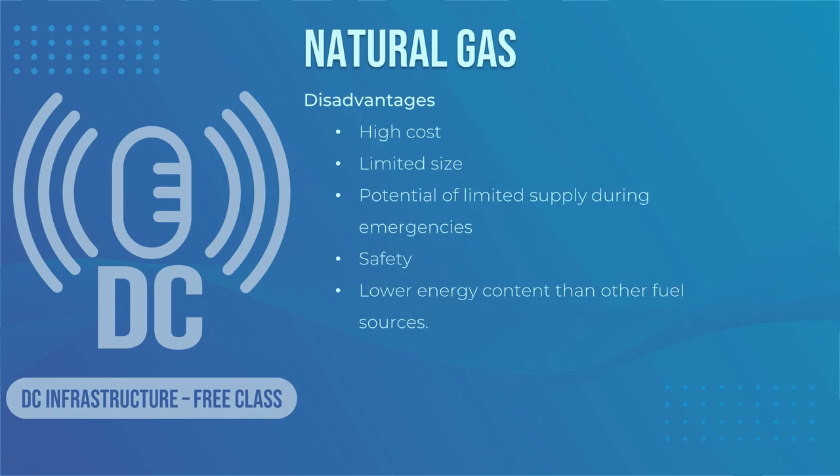The disadvantages of using natural gas are the high cost — gas generators tend to cost more than other generator types, and you are also limited in the size of the generator. Natural gas is provided by a single source regulated by the pipeline it is connected to. Subsequently, during emergencies, gas lines can get sucked dry by other consumers, and if you're towards the end of the line, you might not be able to get supply. Safety is also a factor — if there are leaks it has a high explosive capability. Lastly, the energy content of natural gas is lower than most other fuel sources, so you need more of it to generate electricity.